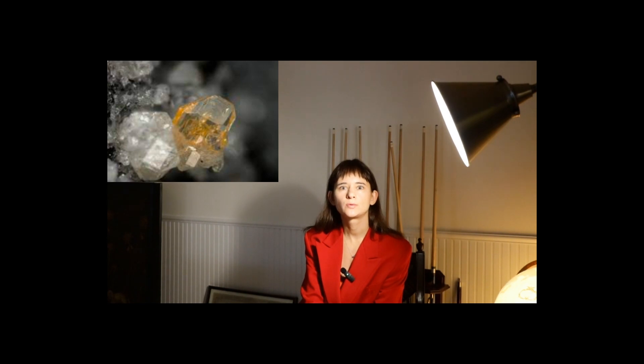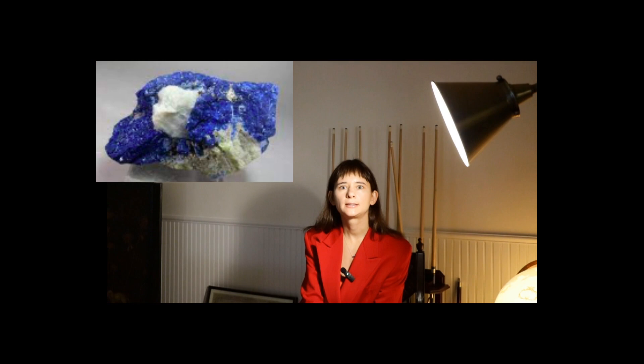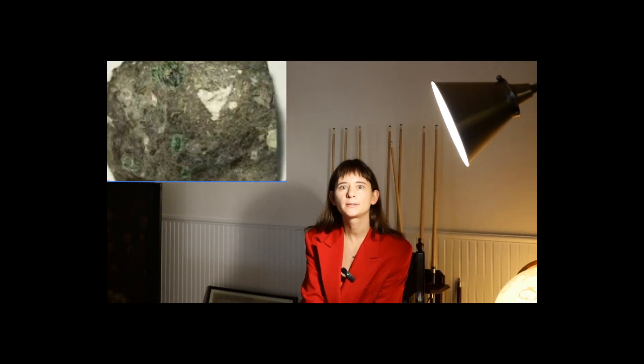Forsterite is usually associated with calcite, green and colorless phlogopite, magnetite, spinel (black and pink), and hornite group minerals. Intermediate members of the series are found in kimberlites and basalts in the form of single grains, poorly formed crystals, and granular masses of bottle-brown color, translucent with a glassy sheen.